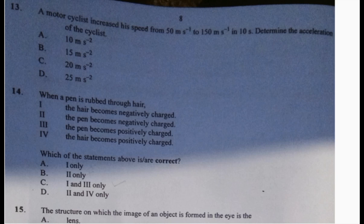The motorcyclist increases speed from 50 meters per second to 150 meters per second in 10 seconds. This is initial velocity, final velocity, and time. To find acceleration: final velocity minus initial velocity over time. So 150 minus 50 over 10 equals 100 over 10, which gives us 10 meters per second squared. The answer for number 13 is A.